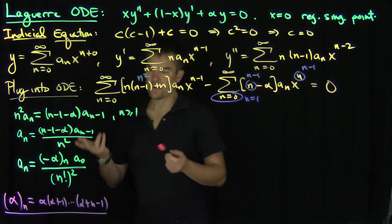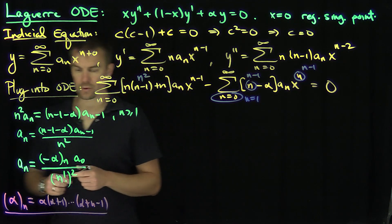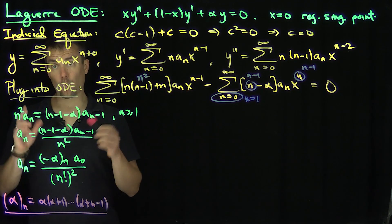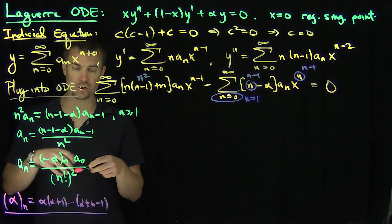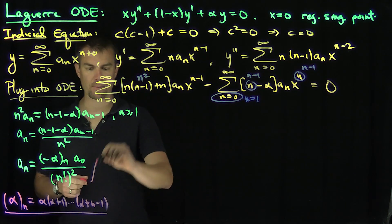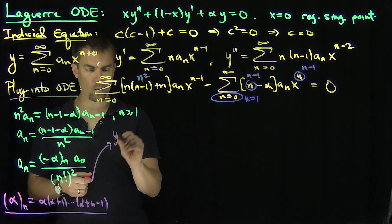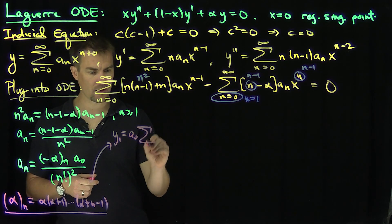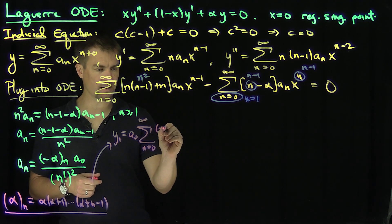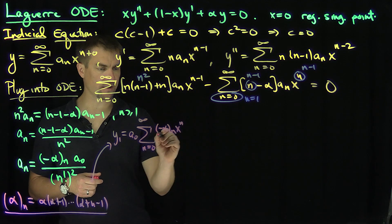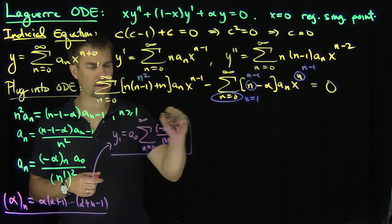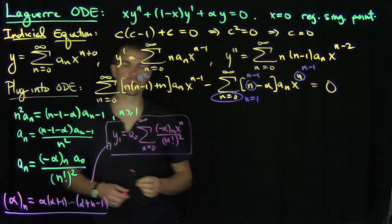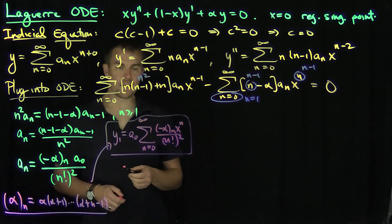So we have a solution to the differential equation. We can sum this up to get one solution of the Laguerre differential equation, which will go on forever. The solution is y1 equals a_0 times the sum from n equals 0 to infinity of negative alpha ascending factorial n times x to the n, over n factorial squared. That is the first solution of the Laguerre ODE.